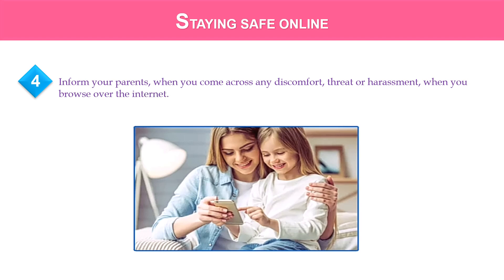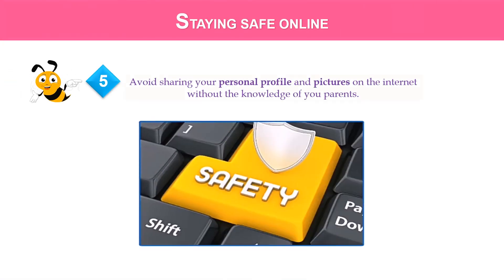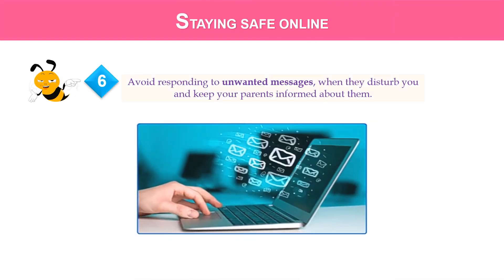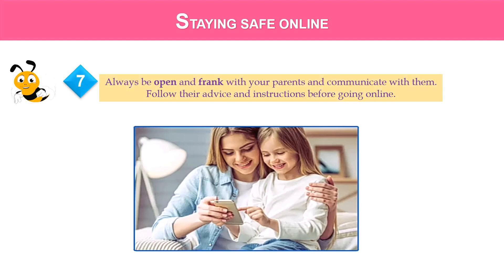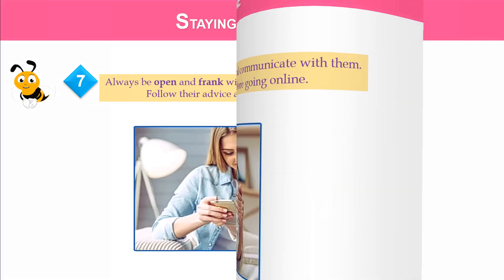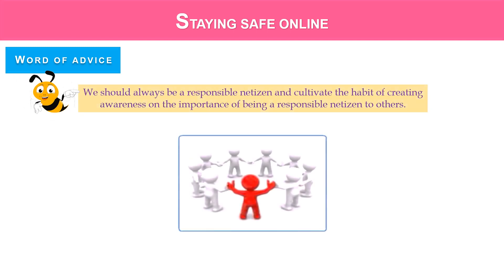Four, inform your parents when you come across any discomfort, threat, or harassment while surfing the internet. Five, avoid sharing personal profiles and pictures on the internet without your parents' knowledge. Six, avoid responding to unwanted messages when they disturb you, and keep your parents informed about them. Seven, always be open and frank with your parents, communicate with them, and follow their advice and instructions before going online. We should always be responsible netizens and cultivate the habit of creating awareness about the importance of being responsible netizens.